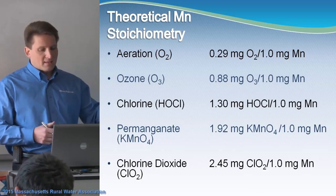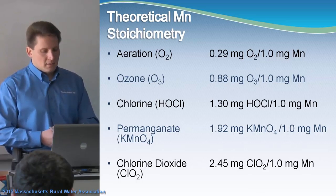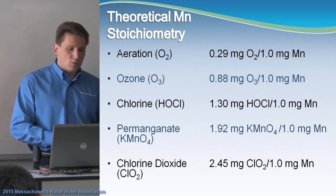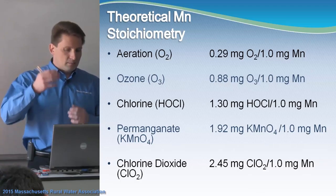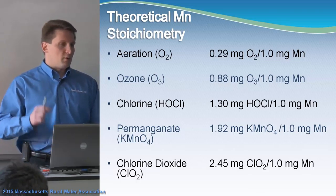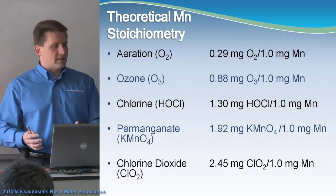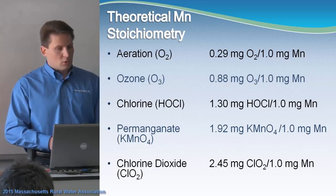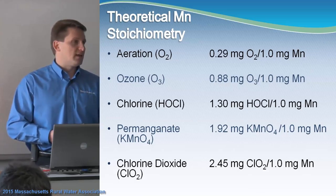This is the stoichiometry — basically how much mass of an oxidant you need per unit mass of manganese. The most common oxidants in drinking water are aeration, ozone, chlorine (hypochlorite), permanganate, and chlorine dioxide. For aeration, you need about 0.29 mg of oxygen per mg of manganese. For ozone, about 0.88 mg/mg; chlorine, 1.3 mg/mg; permanganate, 1.92 mg/mg; and chlorine dioxide, 2.45 mg/mg.